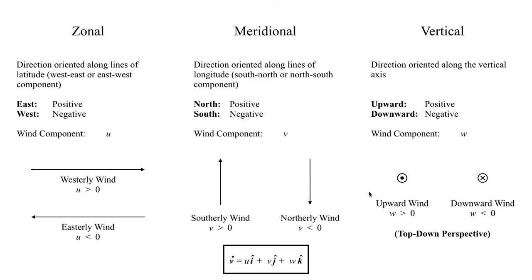Putting it all together into the wind vector: sometimes you'll see it written as bold V or bold u. The full wind vector is the zonal component u times the î unit vector (in the x or zonal direction), plus v, the meridional component, times the ĵ unit vector (in the meridional or y direction), plus the vertical component w multiplied by the k̂ unit vector, which points directly upward. This vector is typically used to represent the entire three-dimensional wind field.